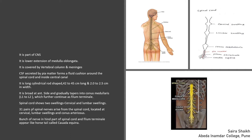The spinal cord gives 31 pairs of nerves. These nerves come from the cervical region, lumbar region, as well as the conus medullaris region.